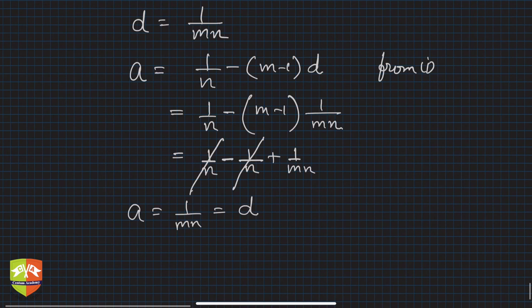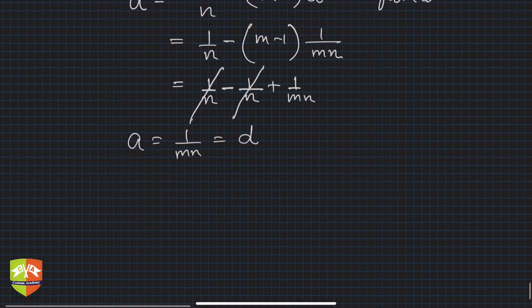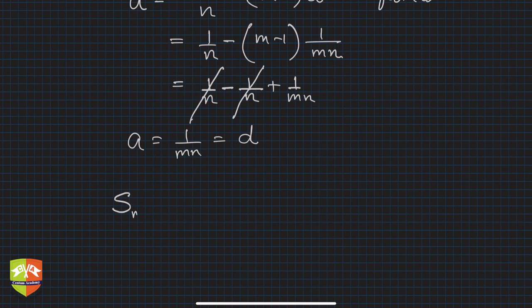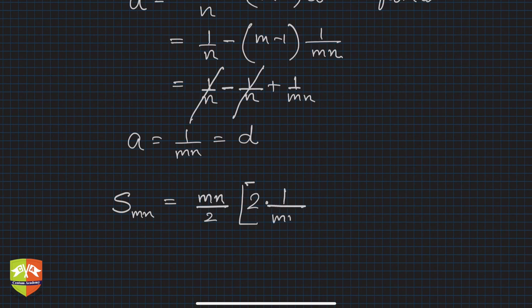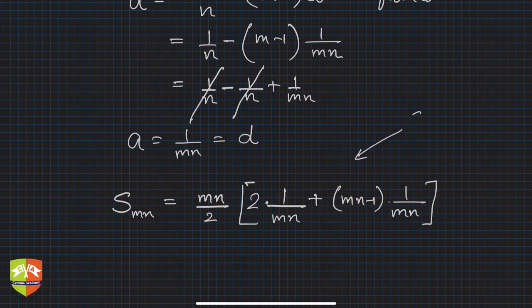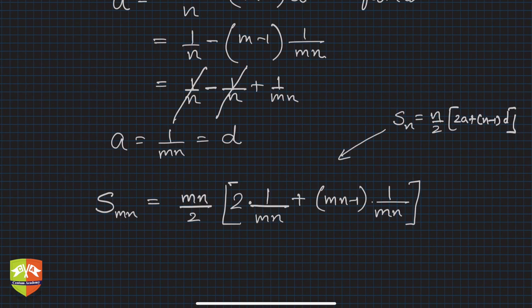We need to find S_mn, the sum of mn terms. Using the formula S = (n/2)[2a + (n − 1)d], replacing n with mn: S_mn = (mn/2)[2 × (1/mn) + (mn − 1) × (1/mn)]. This gives (mn/2) × [2/mn + (mn − 1)/mn].